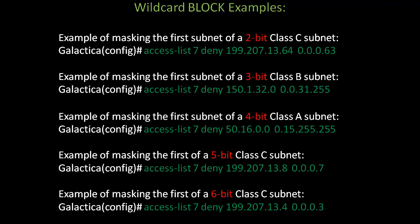The last example is the first subnet of a 6-bit class C subnet. The command would be access-list 7, deny, 199.207.13. Notice the mask part — the first three octets, 0.0.0, means match the network address exactly. Then in the last octet, the IP address is 4 — the block is 4, subtract 1, that's 3. That offsets us for the next network, which will begin on a multiple of 4 at 8.